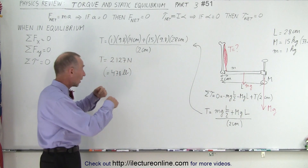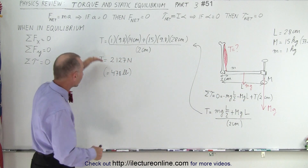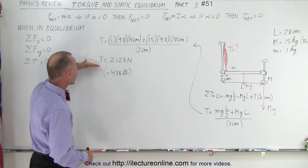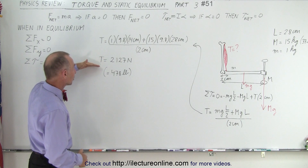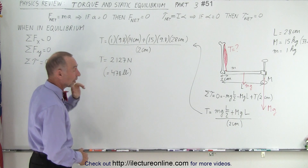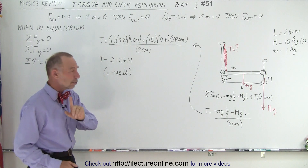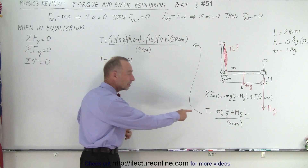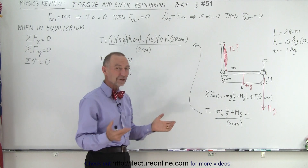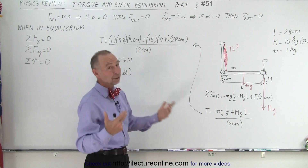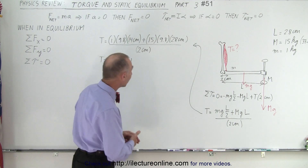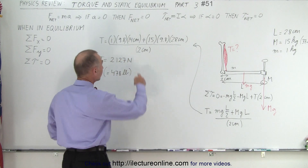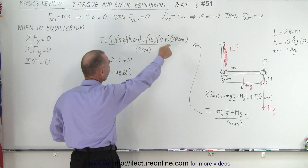Again, we solve this equation for the tension, then we plug in some numbers, do a little algebra, and we end up with the tension equal to 2127 Newtons. Now notice I used centimeters instead of meters — can we do that? Well, we can, because the centimeters in the numerator will cancel out with the centimeters in the denominator.